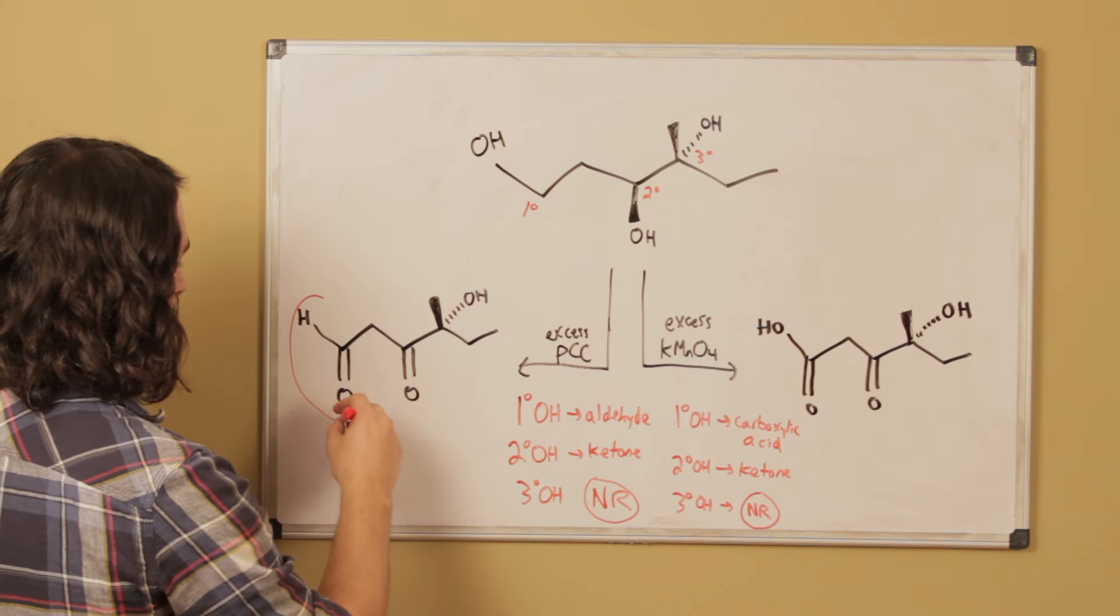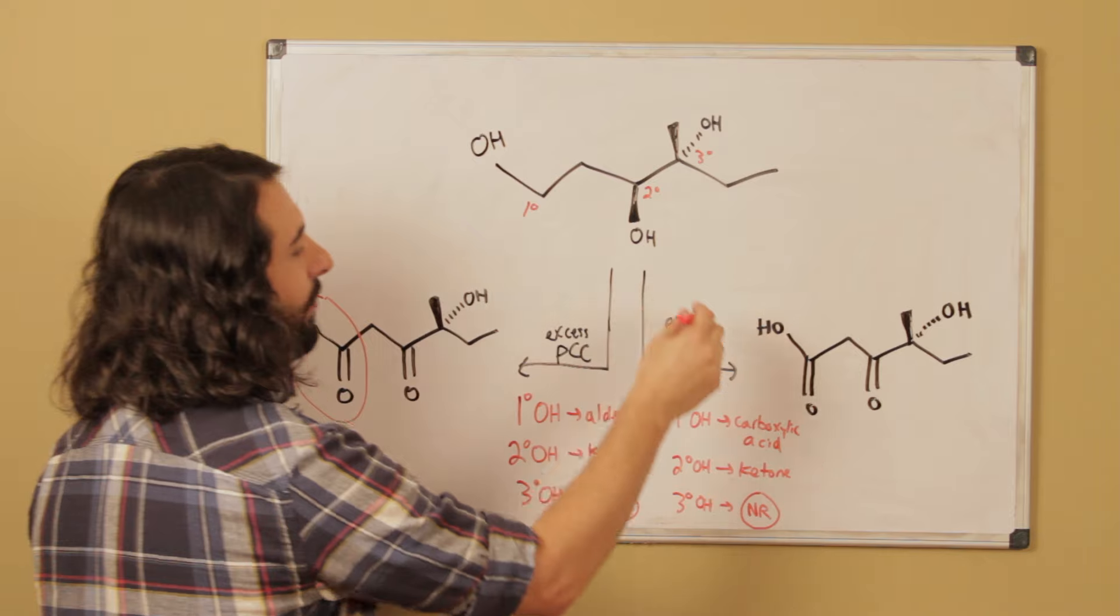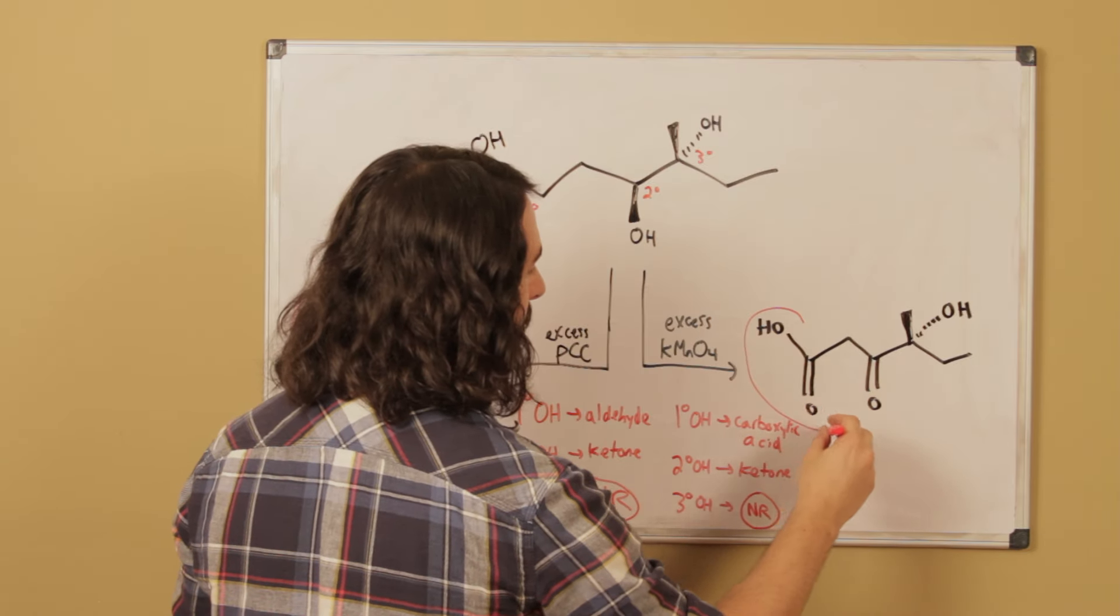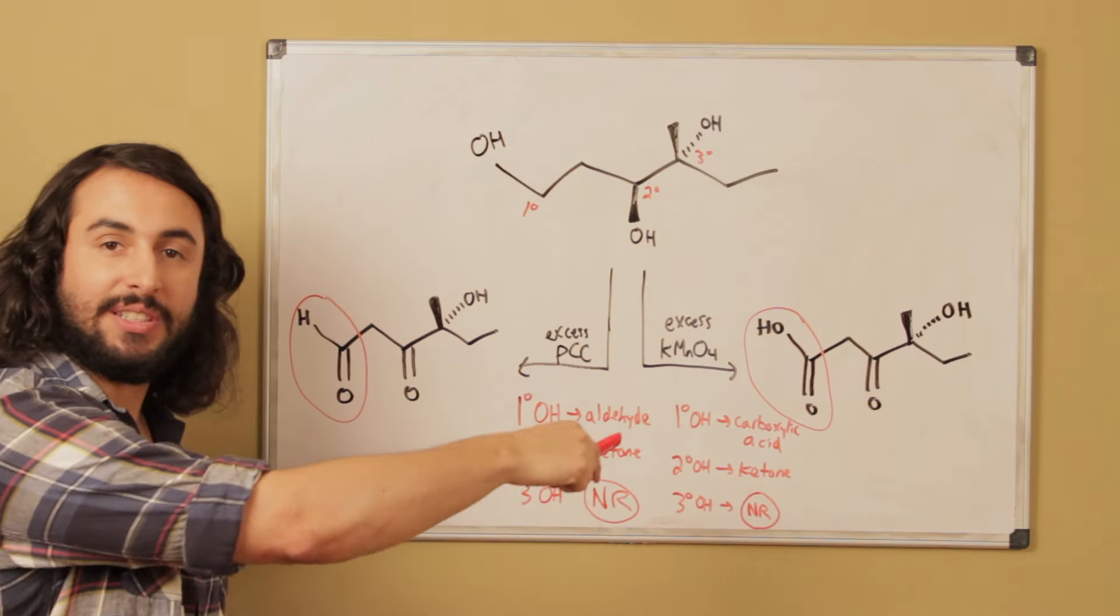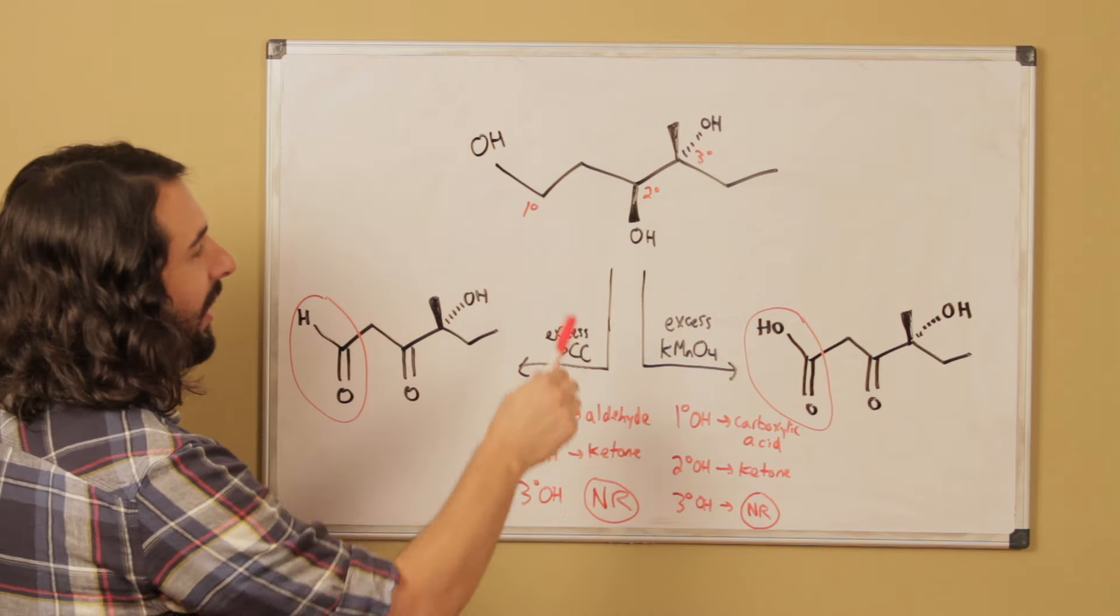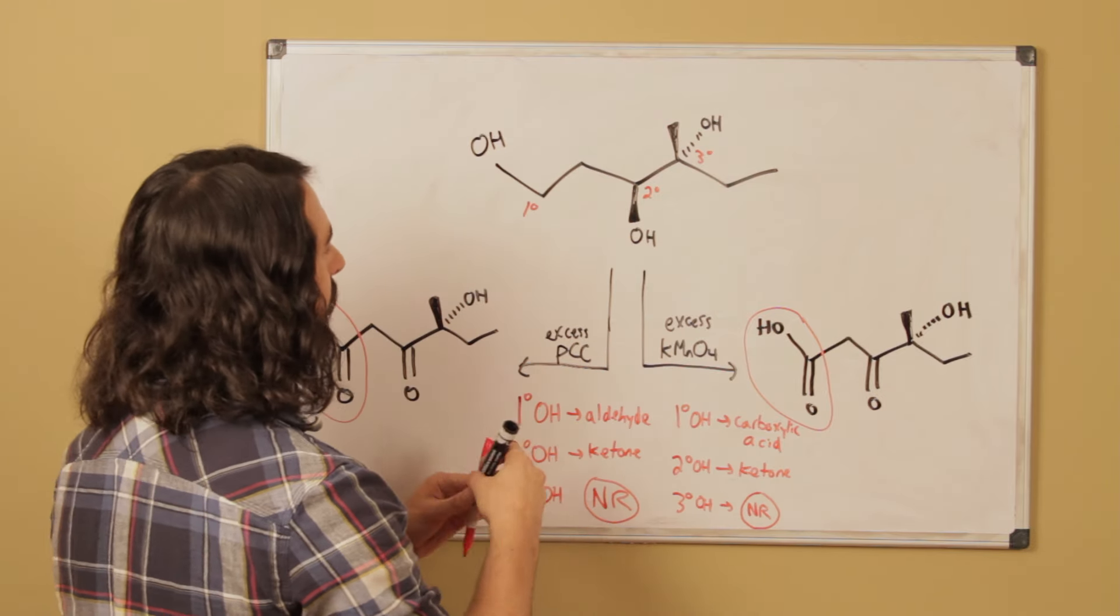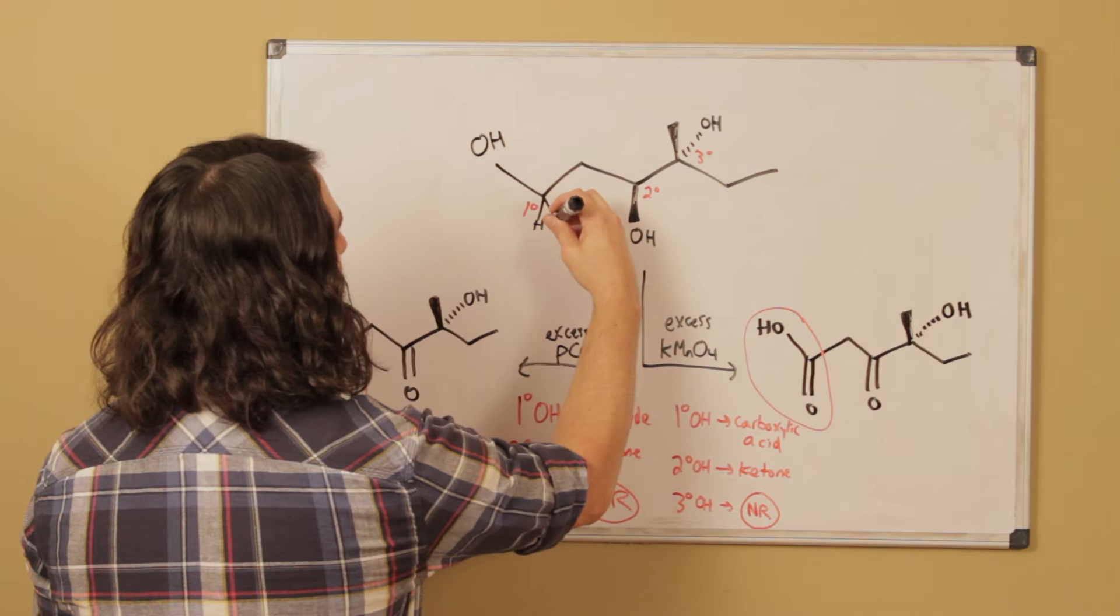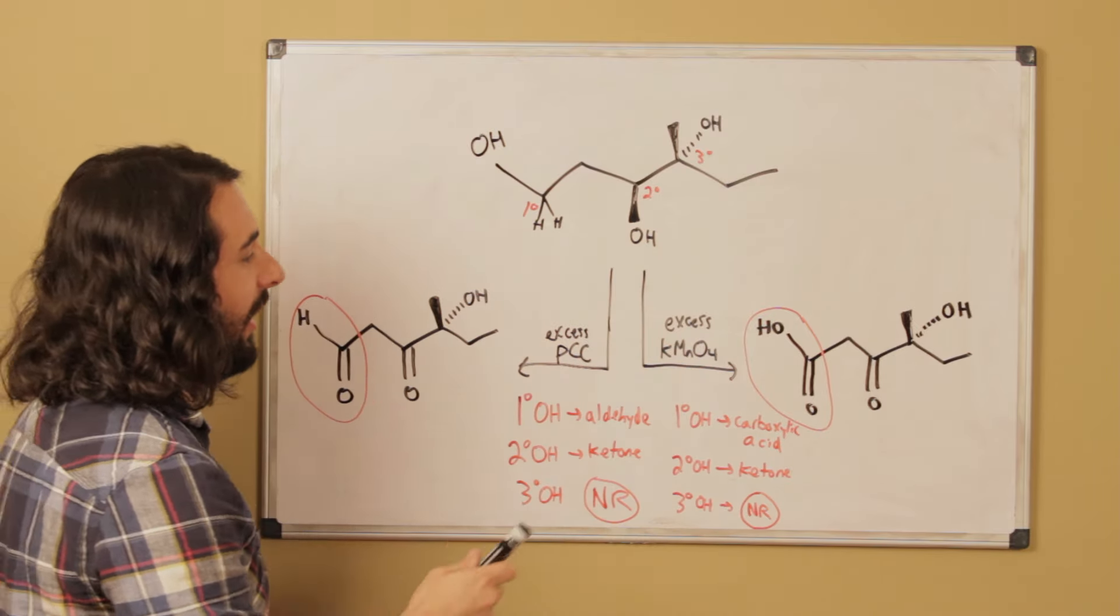So what we're looking at here for a primary position: this is going to be no problem. PCC will take this to the aldehyde level right there, whereas KMNO4 will take that to the carboxylic acid level, as we just stated.